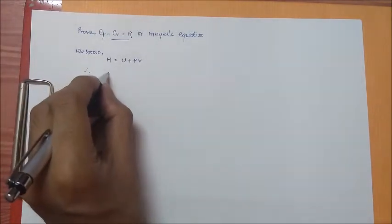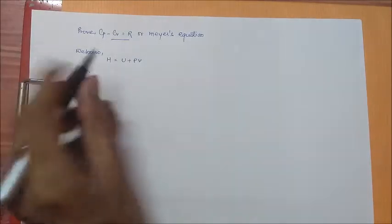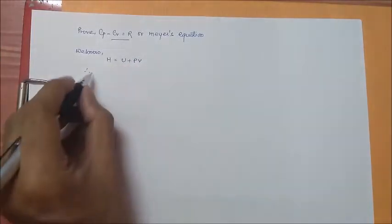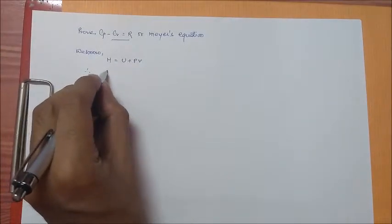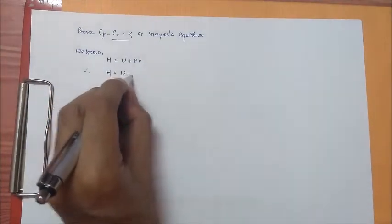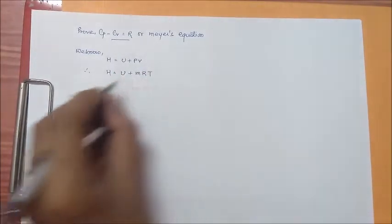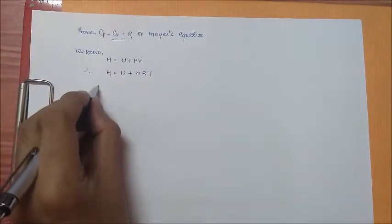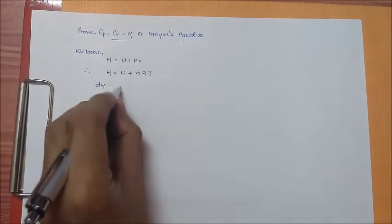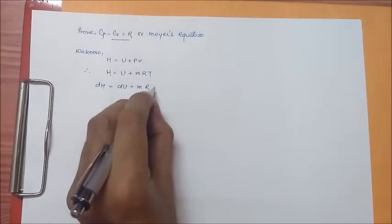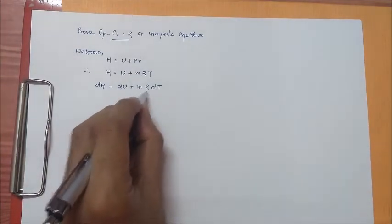For ideal gas, we have PV is equal to mRT, right? So you can write it as H is equal to U plus mRT. When we differentiate like this, dH is equal to dU plus mR dT, because m and R are constant, so the only variable is dT.